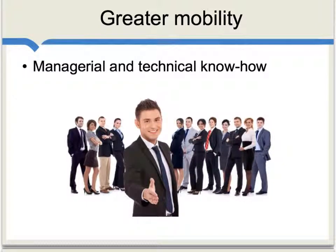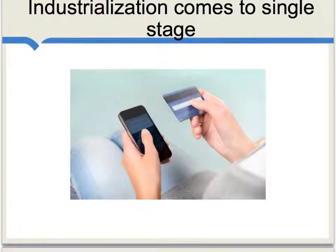Now, in today's world, there is arguably a greater mobility of ideas. And because of information technology, it's much easier to spread managerial and technical know-how to many different parts of the world. So the current model of industrialization perhaps has to do more with producing simply a single stage or a single input in a broader production process.